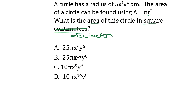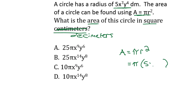Looking at our problem, we have the formula: area equals pi r squared. So area is pi times the radius squared. We are given the radius, so we write pi times the quantity 5x to the seventh y to the fourth, with parentheses around the radius to contain it all as one term.